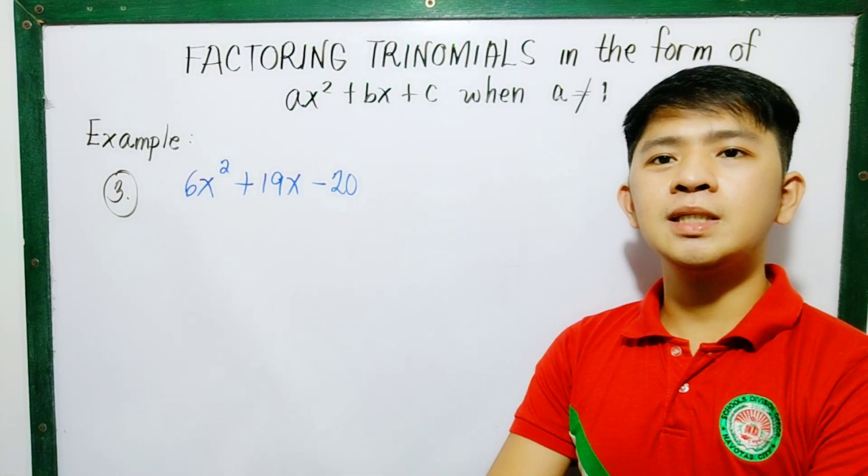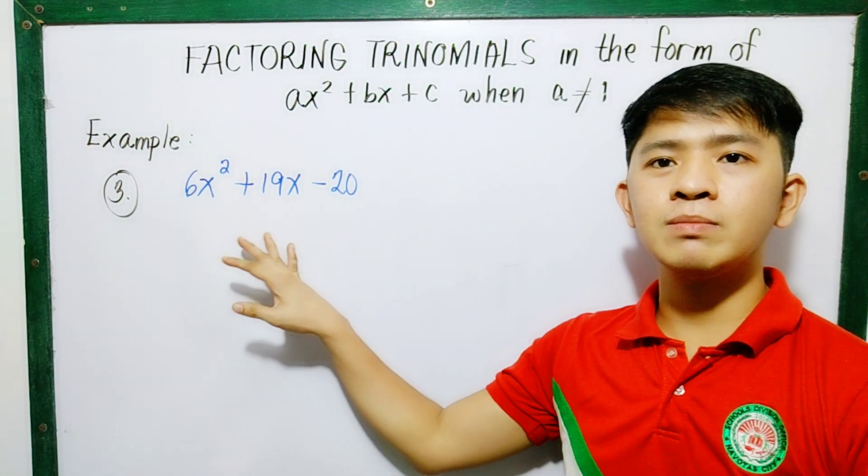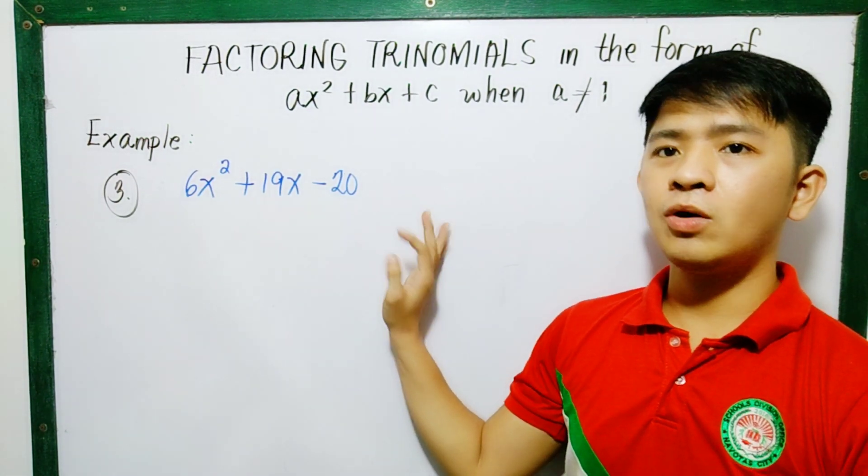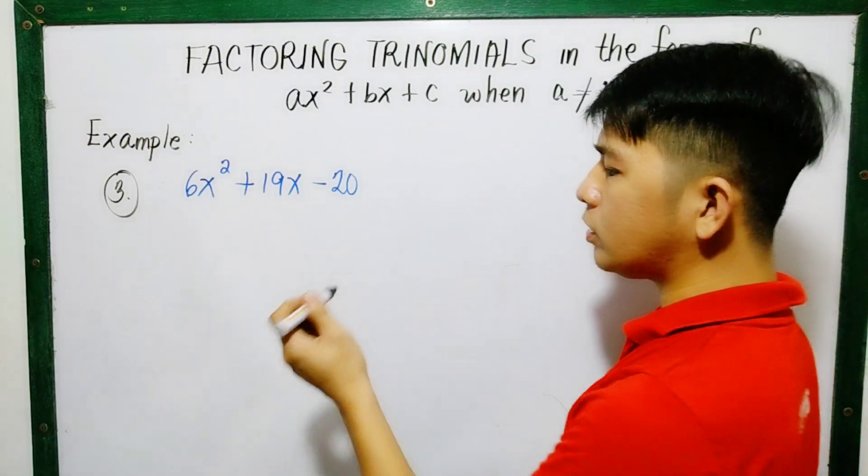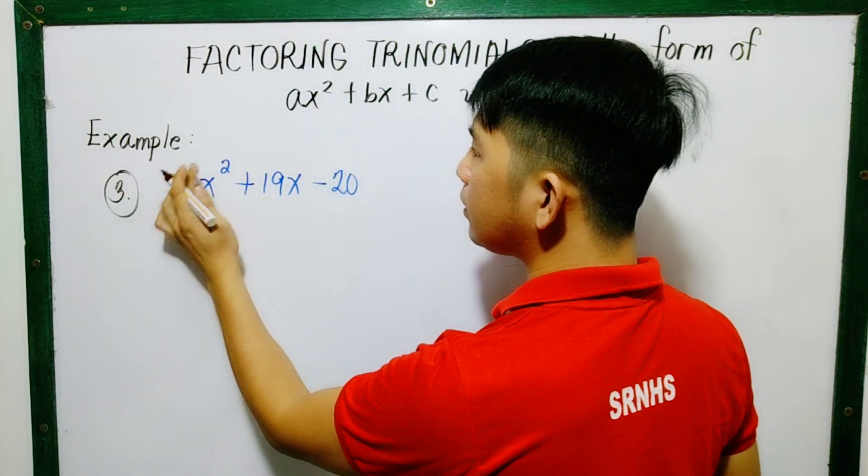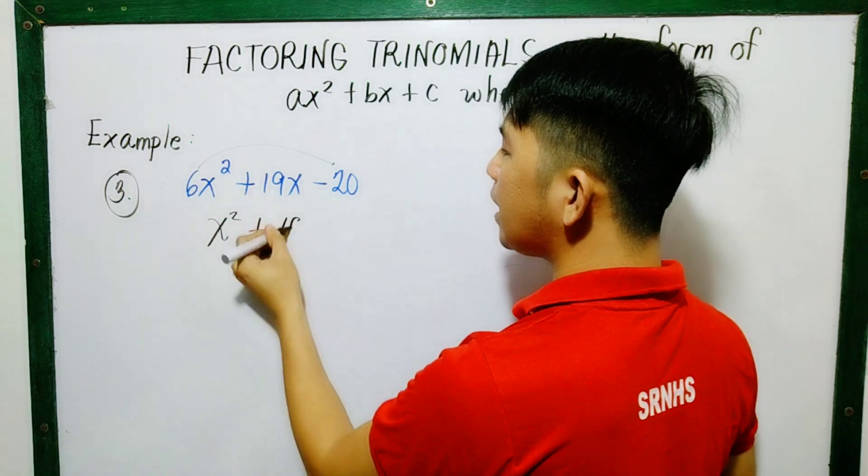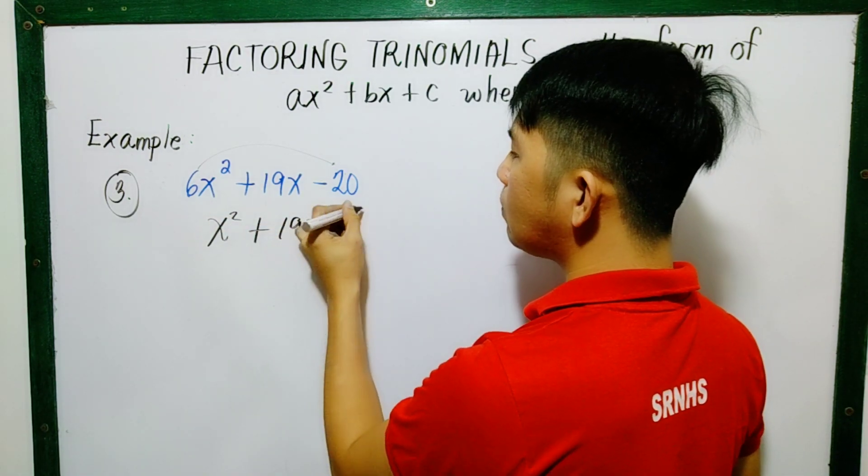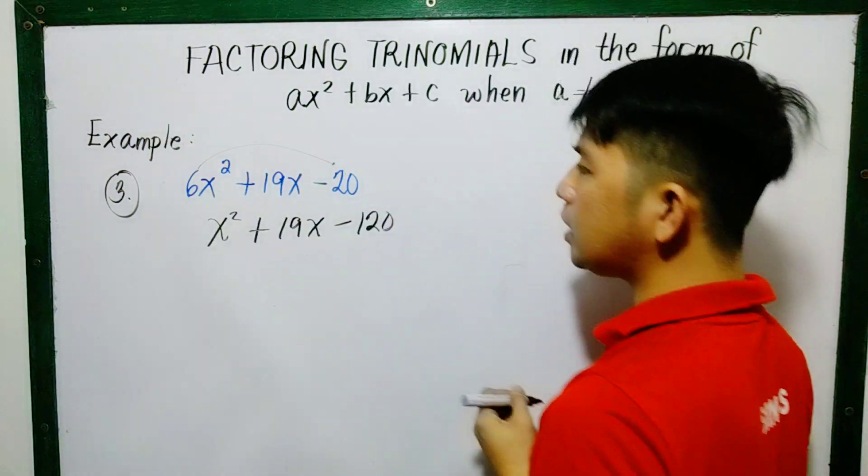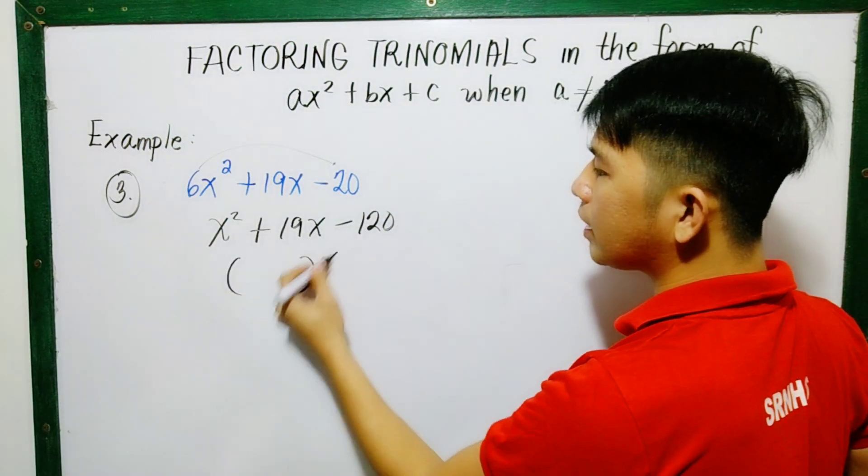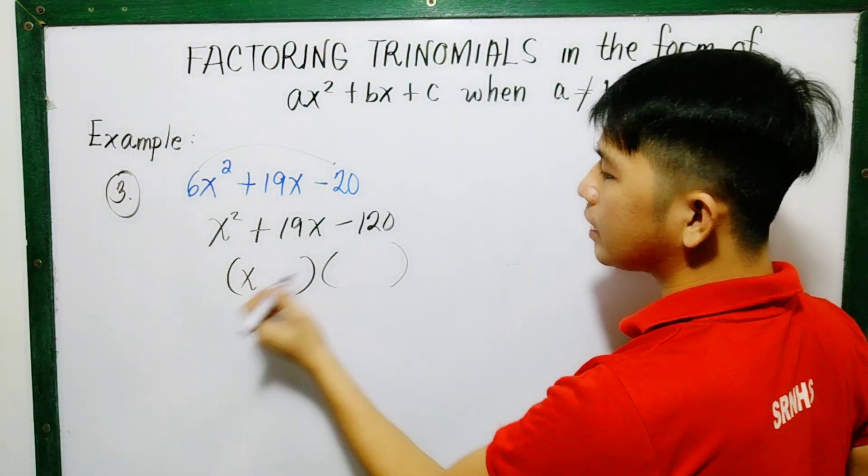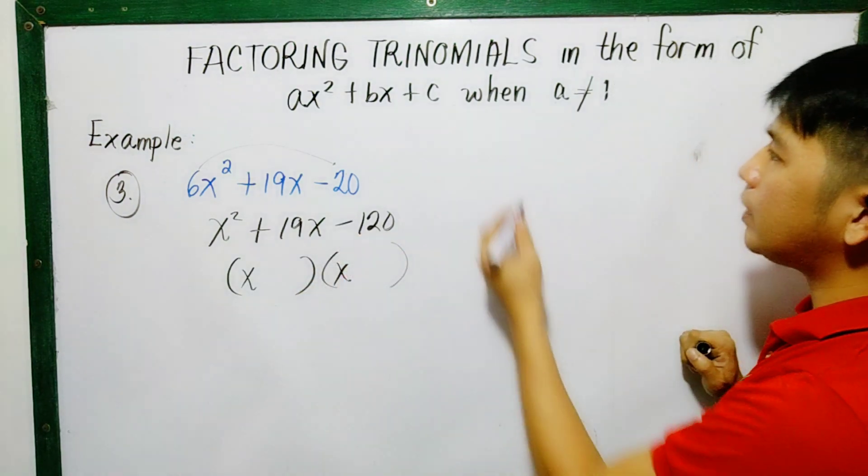Example number 3. We have 6x squared plus 19x minus 20. So again, what we'll do is multiply this. Don't erase this. That is x squared plus 19x minus 120. So factors of x squared, we have x and x. Factors of negative 120.